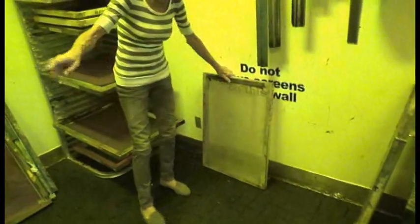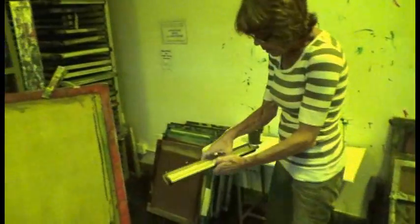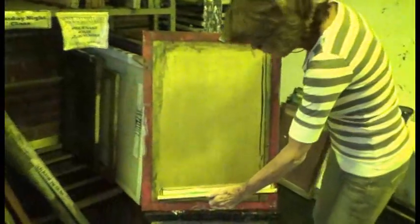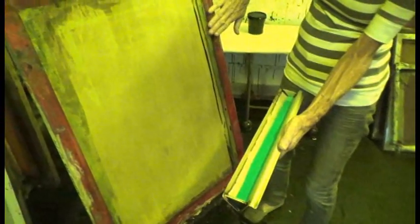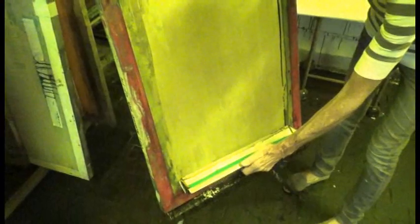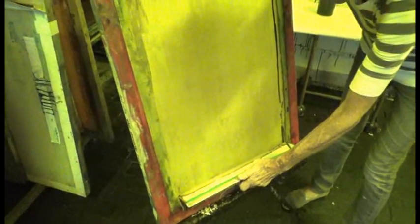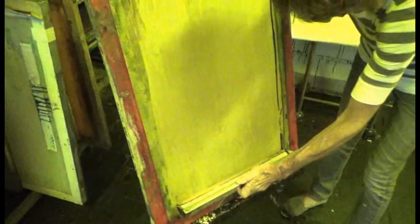To coat the screen, I'm going to place this scoop coater on the flat side of the screen, the print side. I'm going to place this about an inch above the bottom and press it very tightly against the mesh and tip it until the emulsion is touching all the way along the edge of the scoop coater.